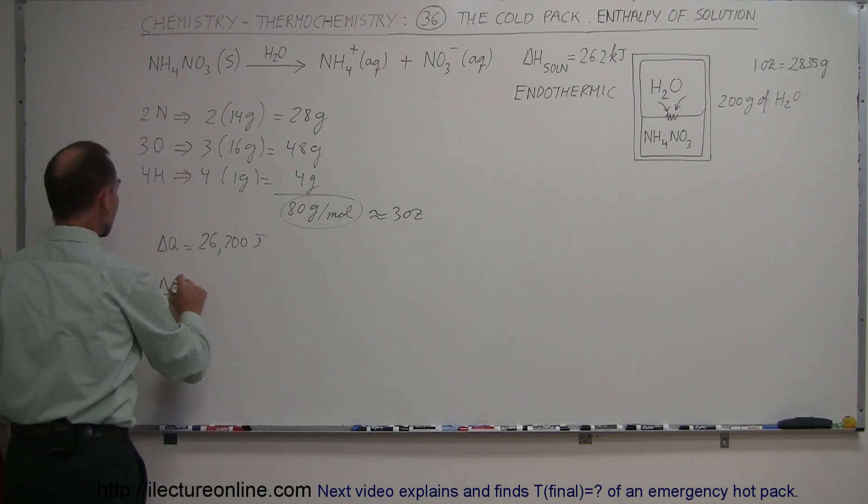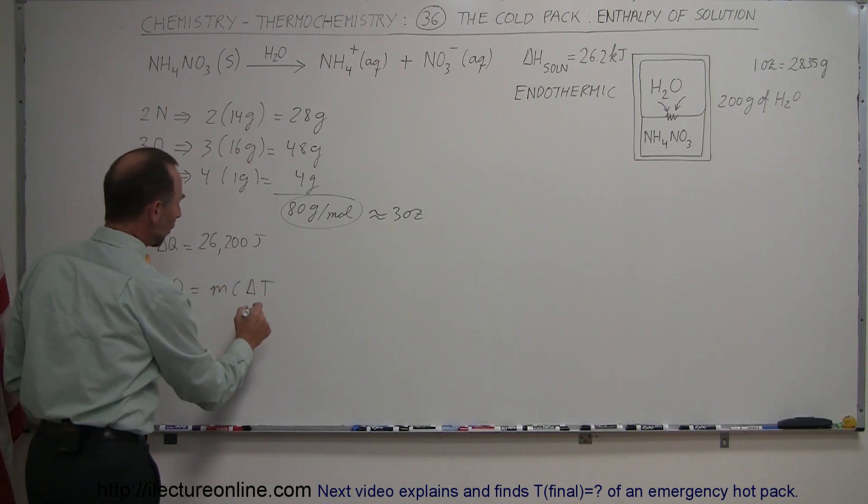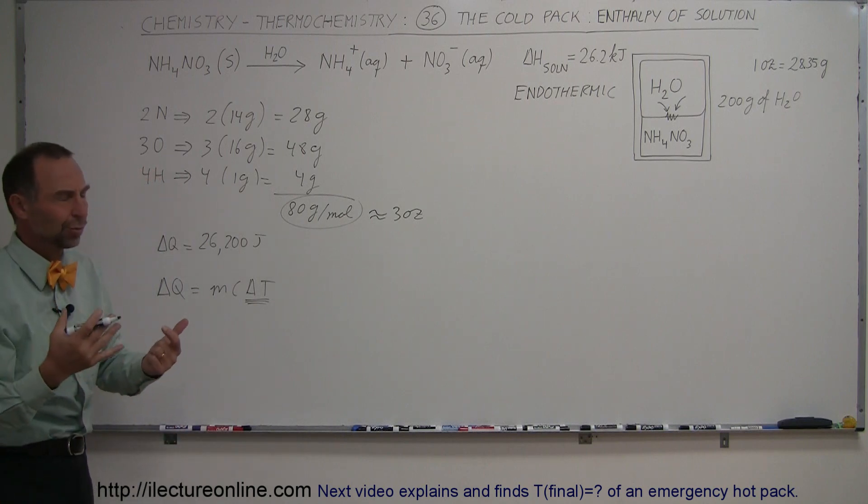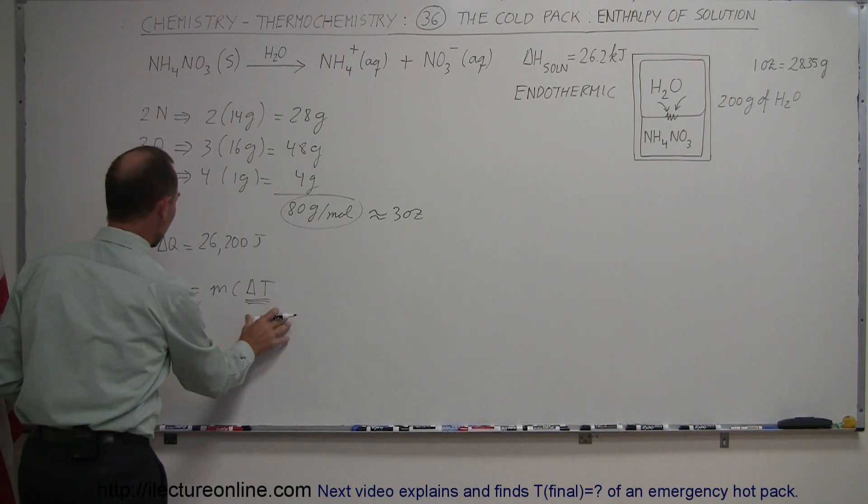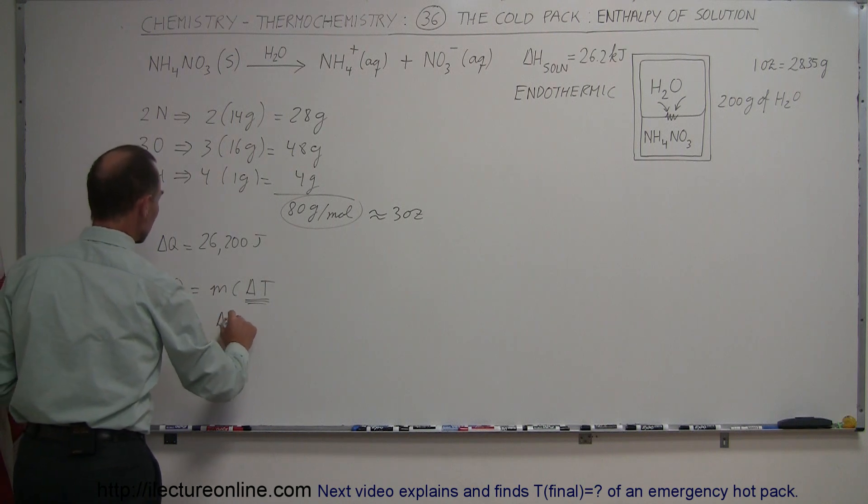And notice again that the change in the temperature of the water can be found by this equation: that the delta Q, the heat absorbed or given off, is equal to the m c delta T. So if you want to know how much colder the water is going to get from what it is, assuming it's a room temperature of about 20 to 25 degrees.